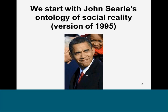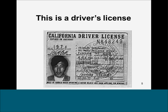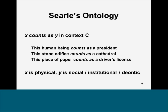This is a president, as we can all see. This is a cathedral, and this is a driver's license. Searle's ontology explains all of these three kinds of social objects on the basis of the formula: X counts as Y in context C. So a certain human being counts as a president, a certain stone edifice counts as a cathedral, a certain piece of paper, cardboard or plastic counts as a driver's license. In each case, we have an X term which is physical, a Y term which is a social object, and certain kinds of beliefs, habits, and background which form the context.